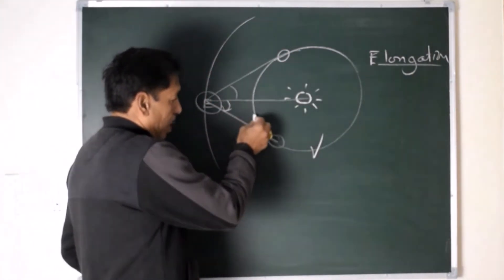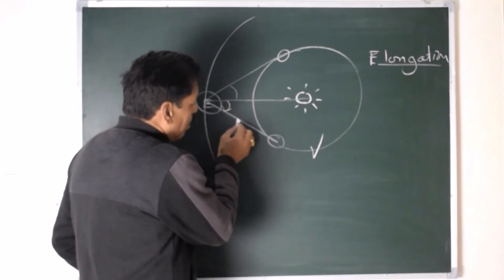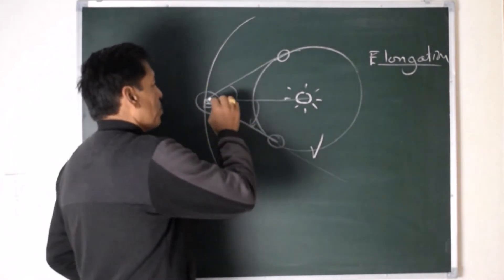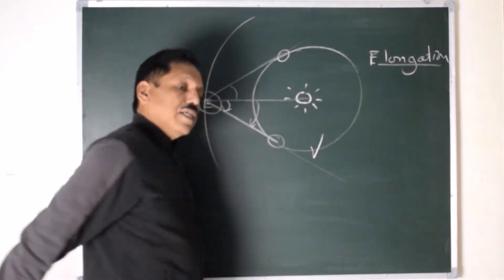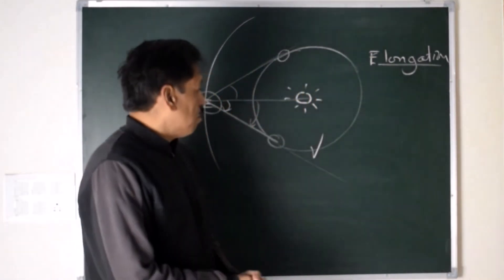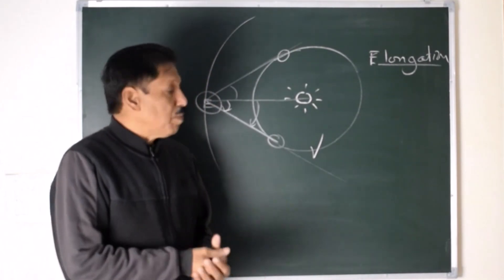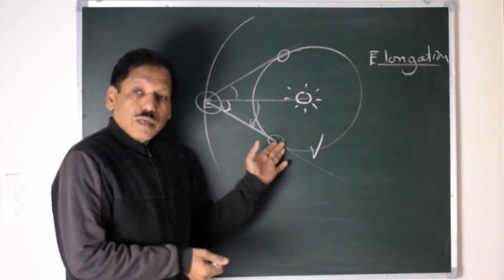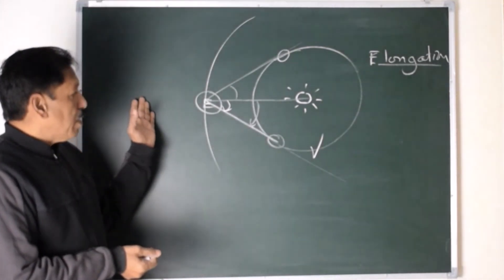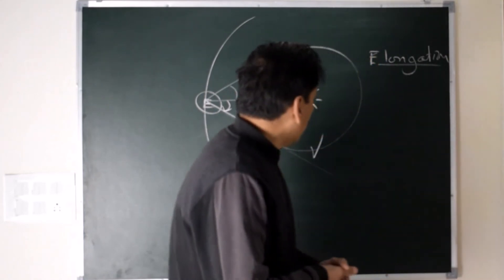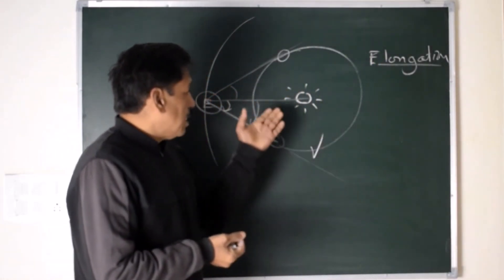As you can see, while going around the orbit, there is a limit to which this elongation can increase. So can I say that inferior planets have a limit of maximum elongation? Venus can never come on this side of the Earth. That means Venus and Sun can never be in opposition.